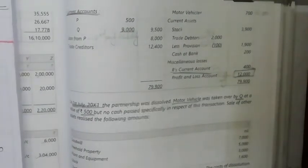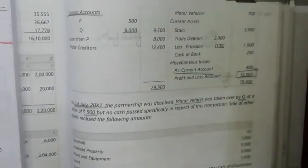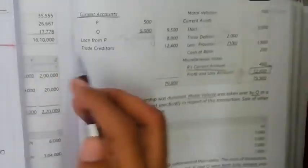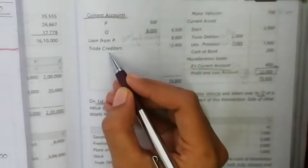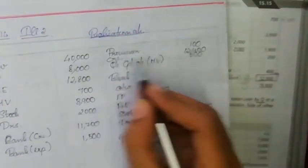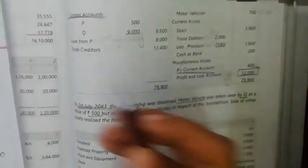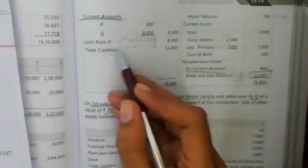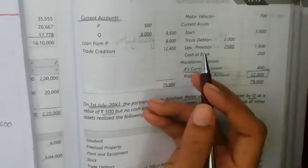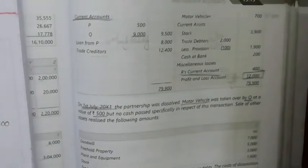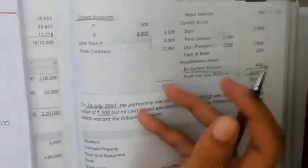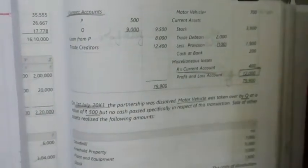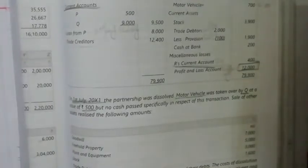Next is the liability transfer. Third-party liabilities such as trade creditors of 12,400 are transferred to the realization account. The loan from P is a second-party liability — it is not transferred to the realization account but is repaid through the cash account.